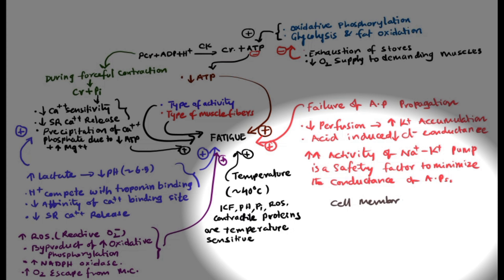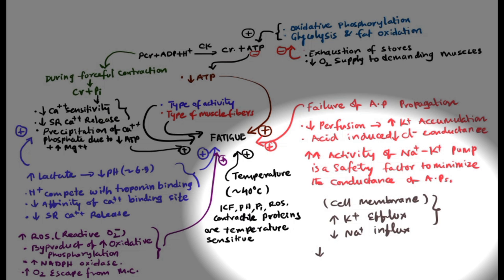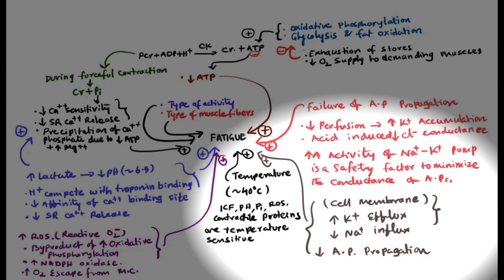There is mishandling of sodium as well as potassium: increased potassium efflux is typically seen during high activity, as is decreased sodium influx. These two instances of ionic channel mishandling promote and facilitate fatigue by decreasing the propagation of action potentials.